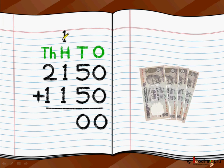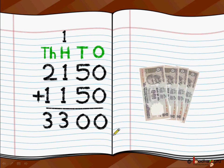Now we do the addition: 1 plus 1 is 2, 2 plus 1 is 3. And then we add the 1000's place: 2 plus 1 is 3. So Mohan has saved 3300 rupees in total now.